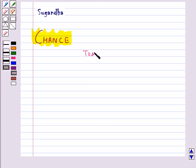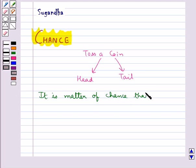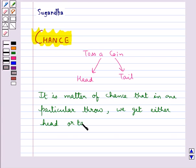If we toss a coin, we may either get a head or a tail. We cannot always correctly predict that we will get a head or a tail, and it is a matter of chance that in one particular throw we get either head or tail.